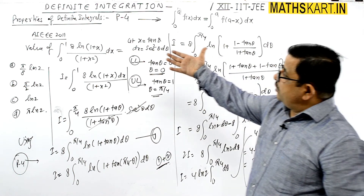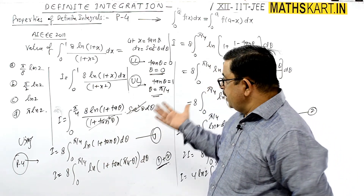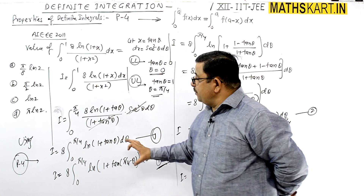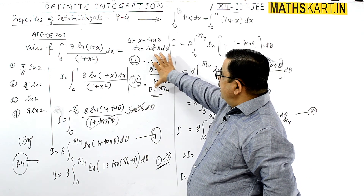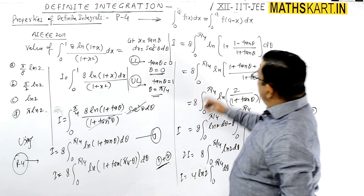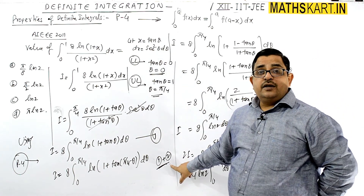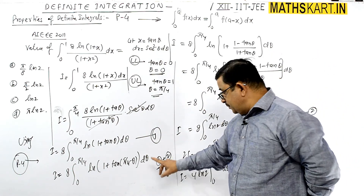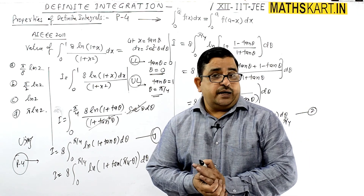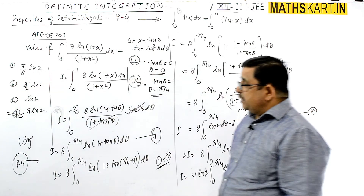This particular question from AIEEE 2011 requires a certain amount of work — after the substitution x equals tan theta, then applying Property 4, you get the two equations and add them together to get the final answer i equals pi ln 2, which is option D. This completes the solution.